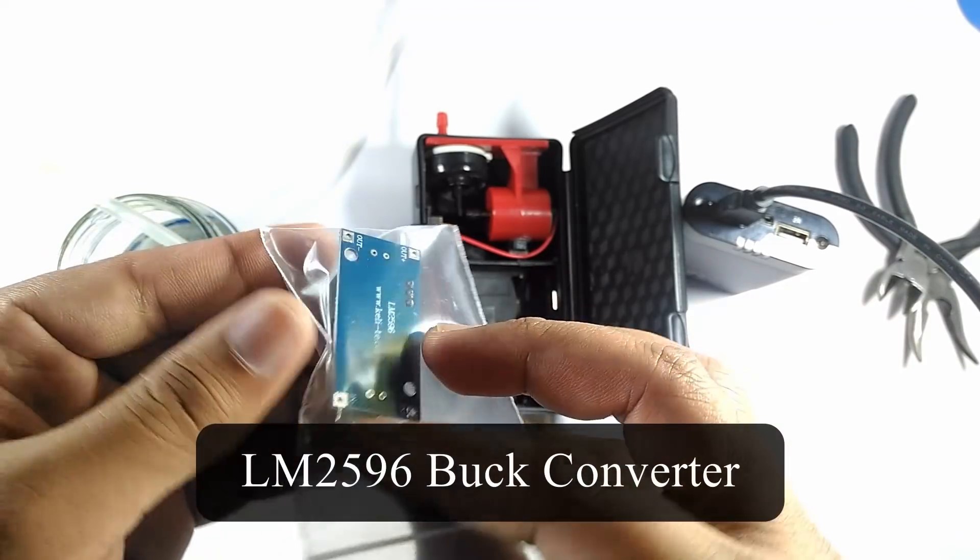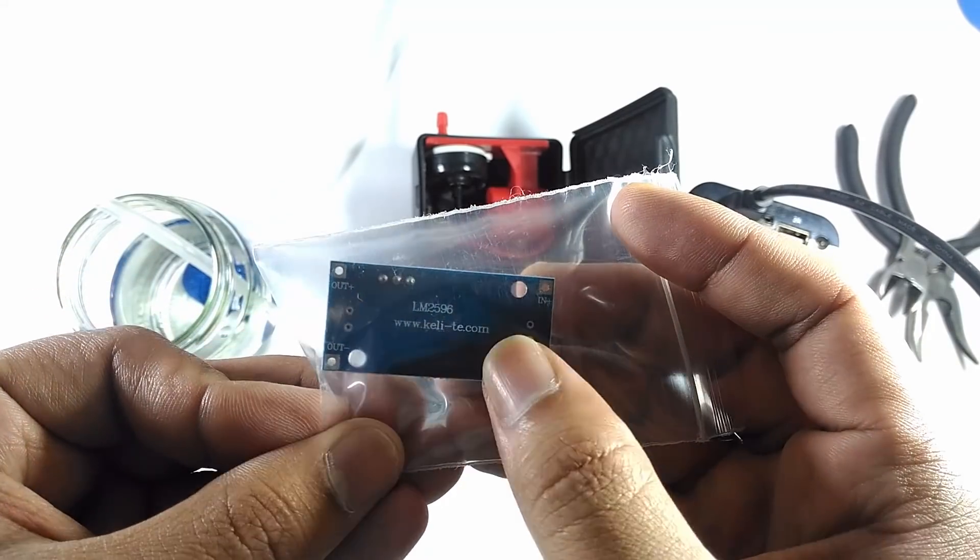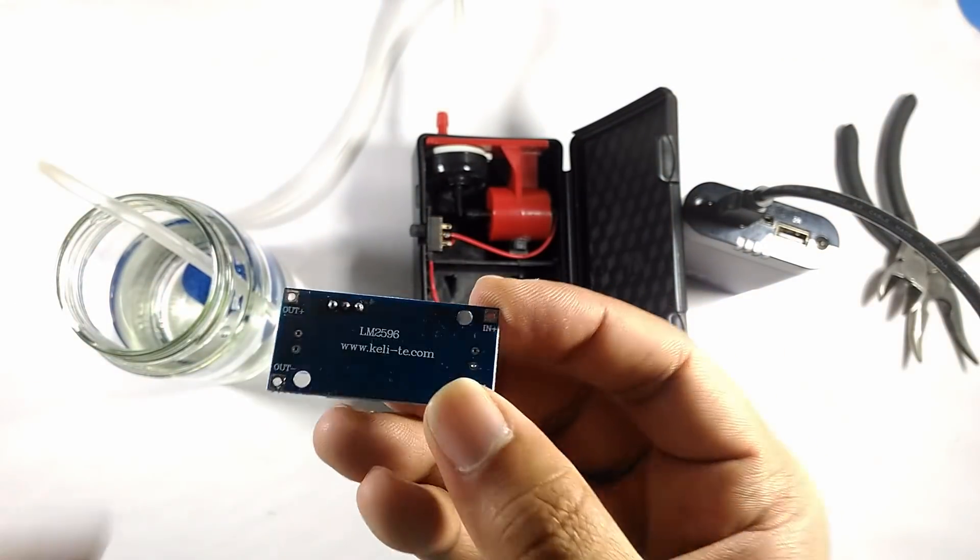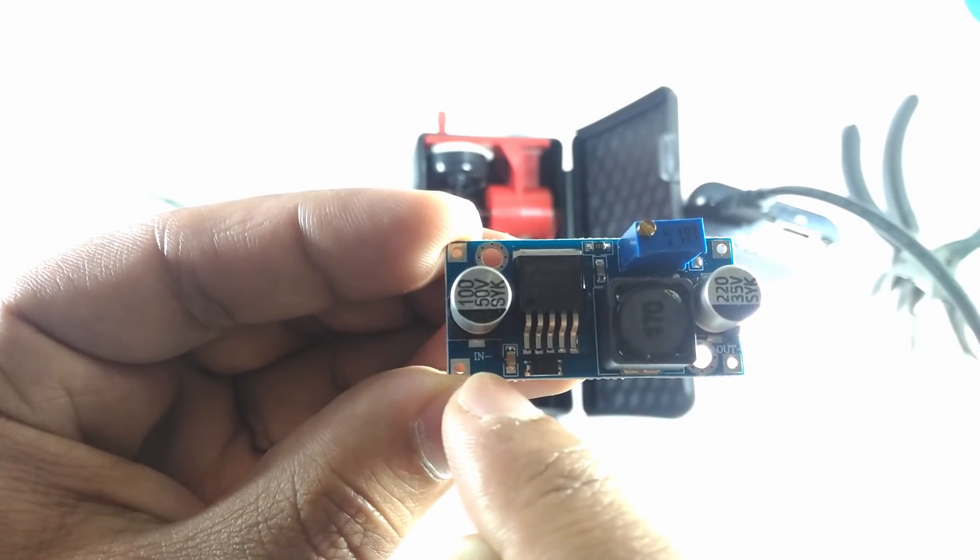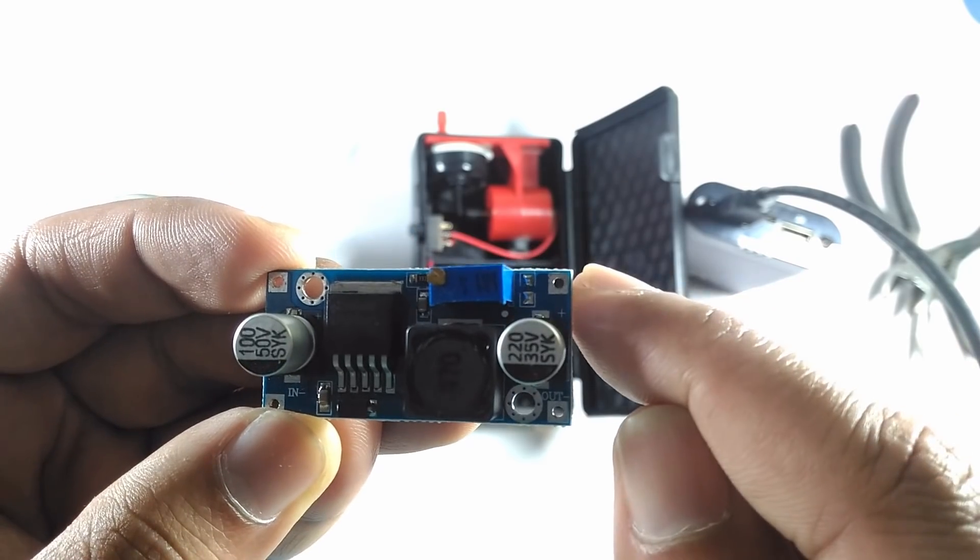I will use an LM2596 buck converter to step down the voltage from 5V to 1.5V. The list of necessary parts and the wiring diagram will be in the description. Going over voltage can kill the motor or wear out the pump quite fast.